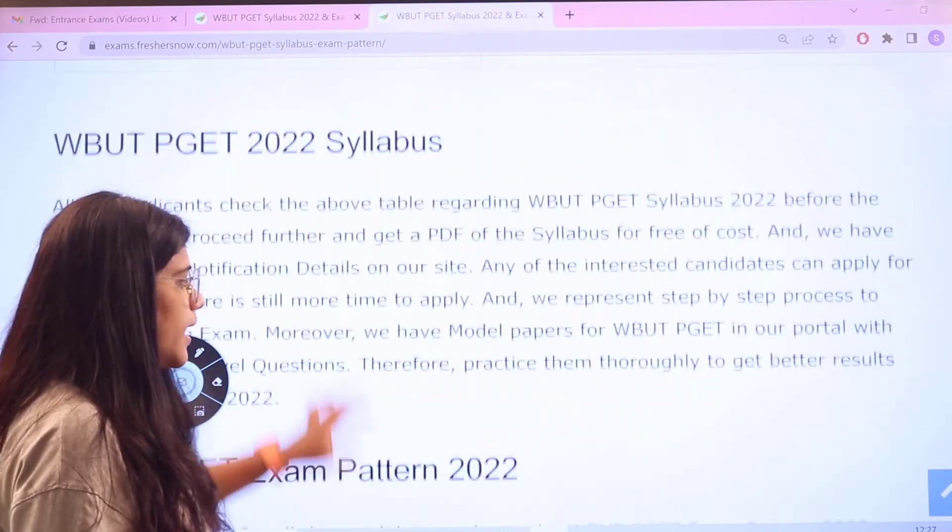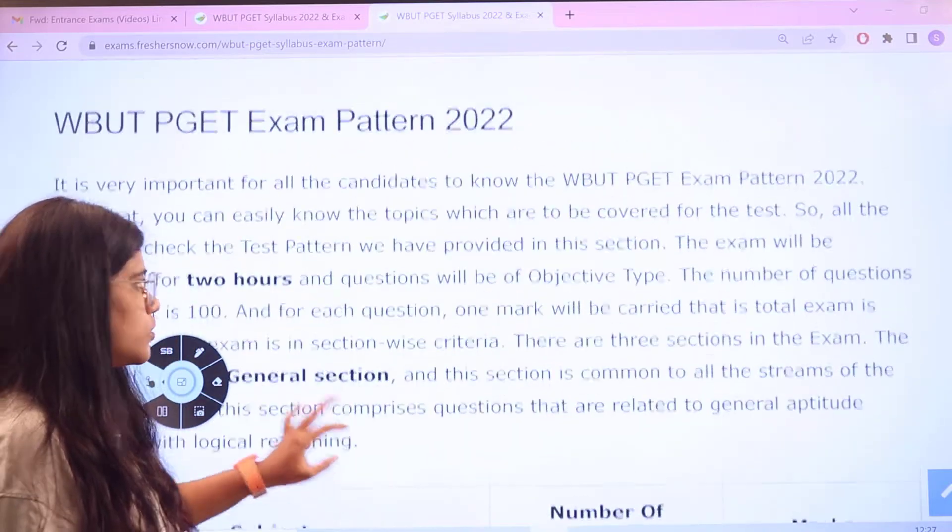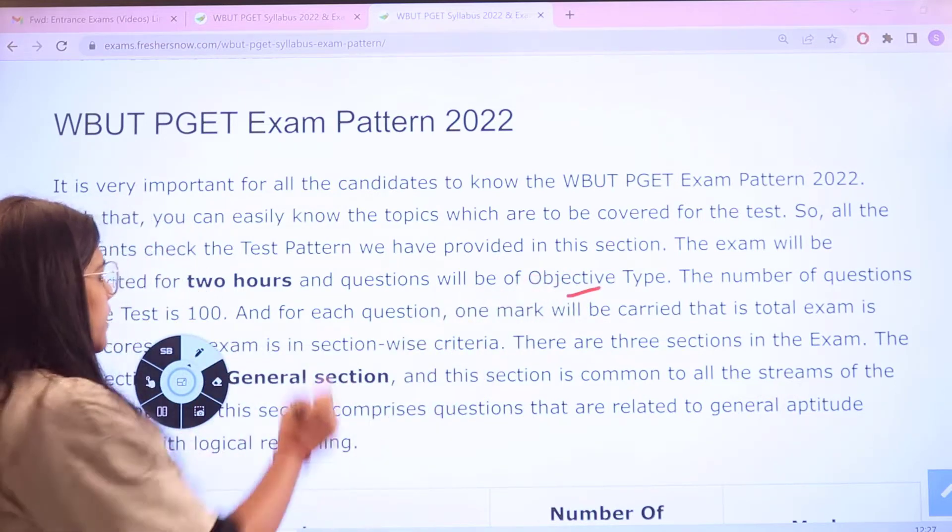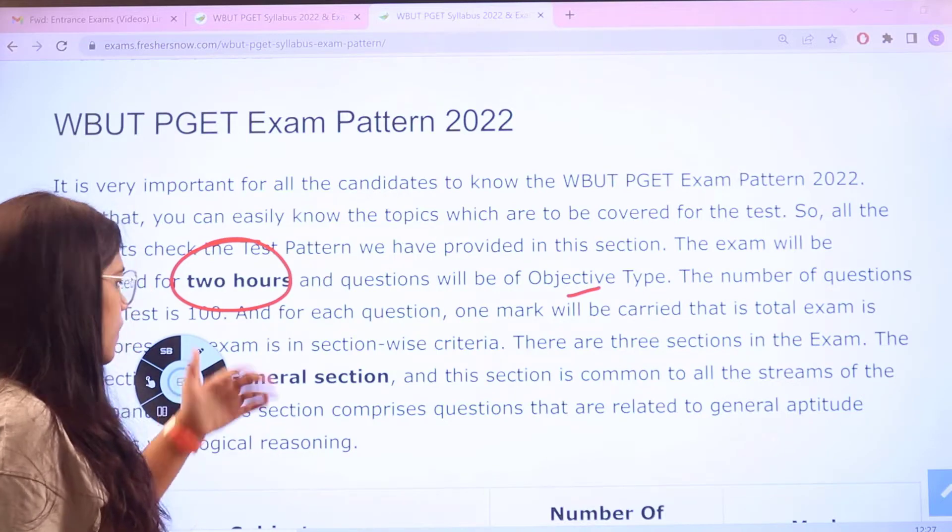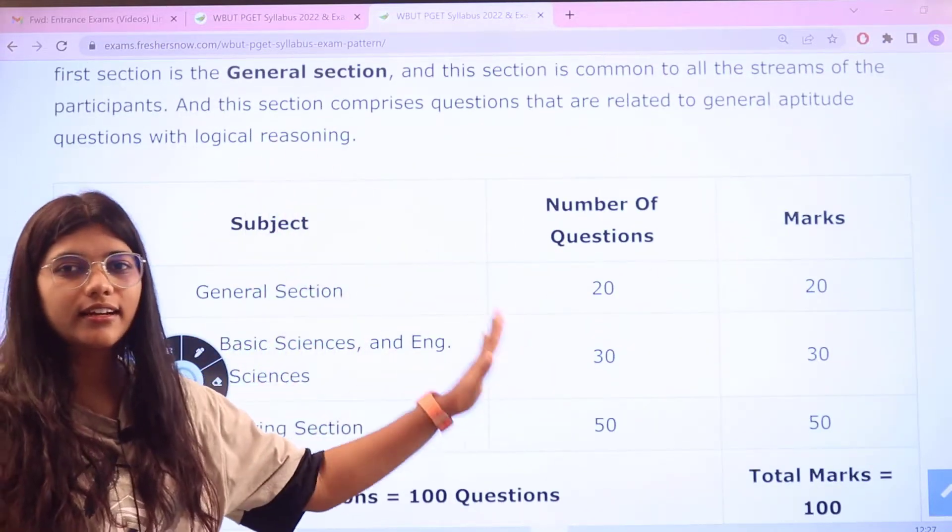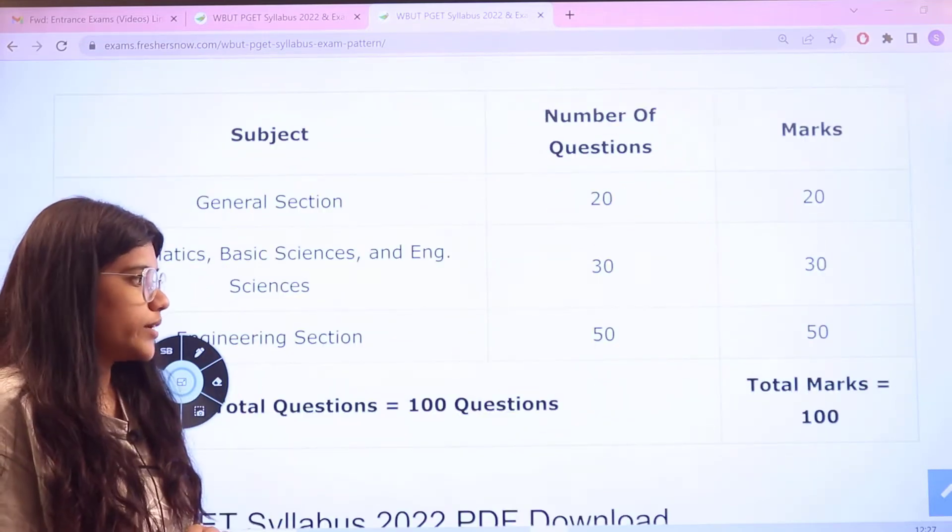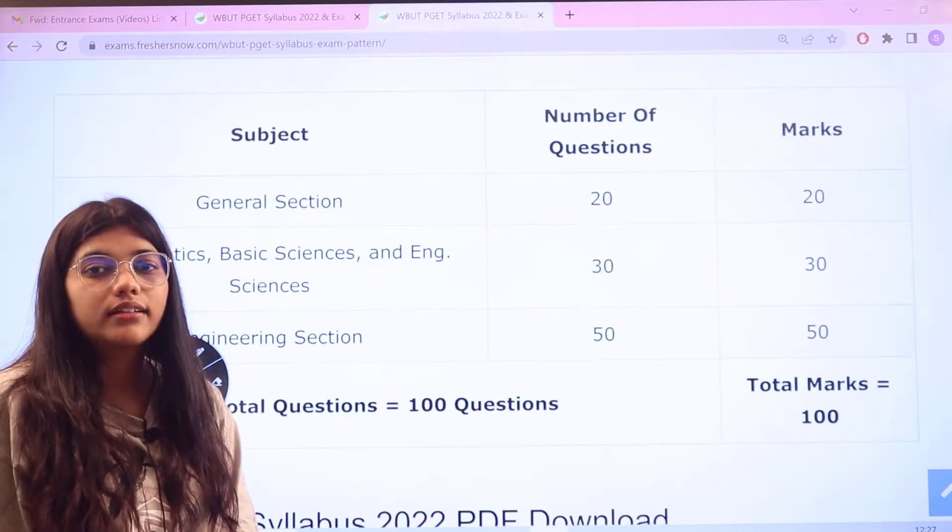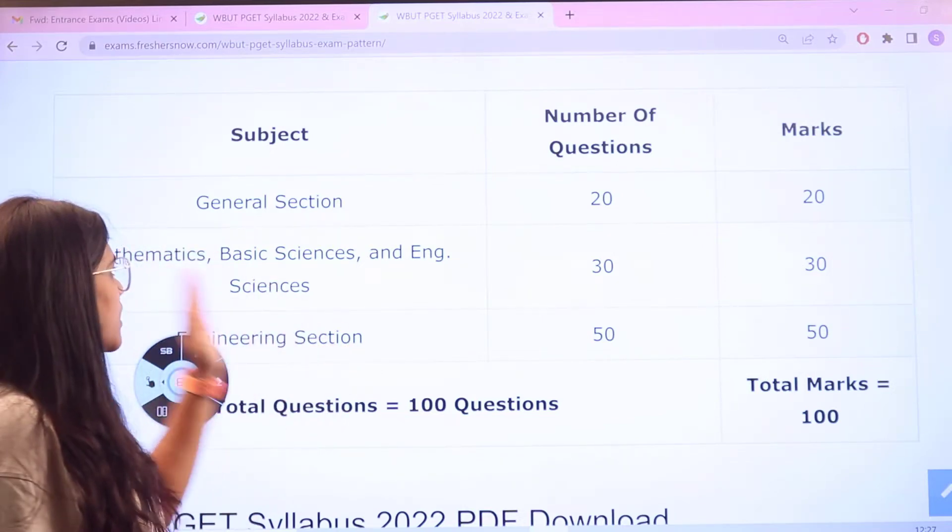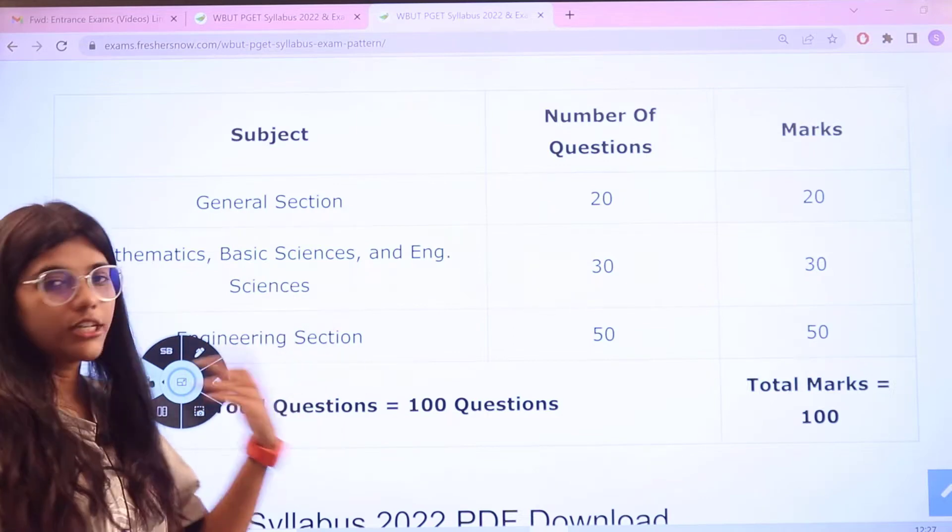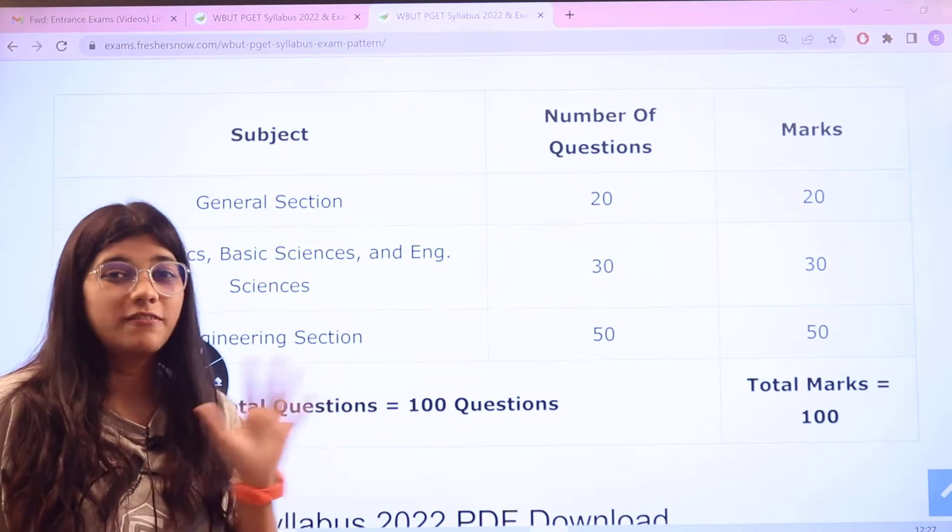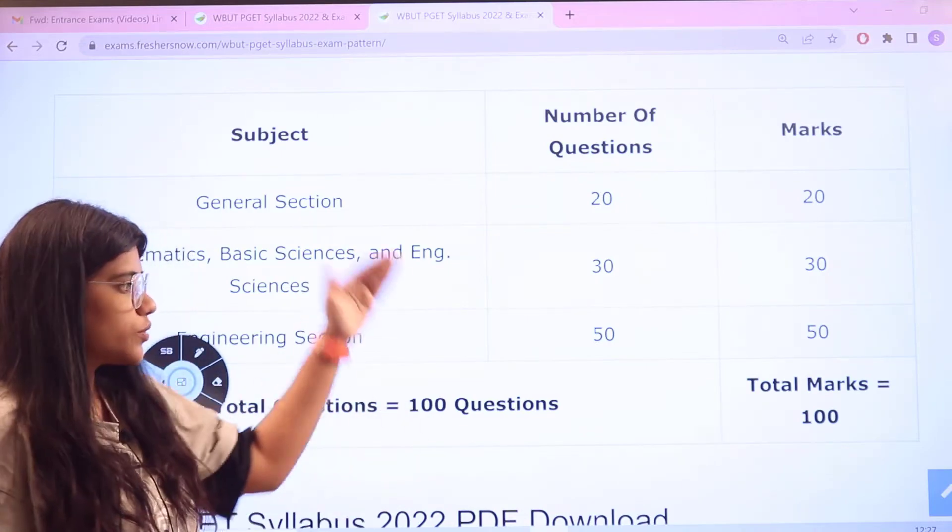Examination pattern is as follows: the examination is going to be objective-based questions which is going to be conducted for two hours. The test pattern or the marking criteria for all the sections are provided very clearly in a table format. The total marks of the questions are hundred and there would be hundred questions asked. General science section have 20 questions carrying 20 marks. For mathematics, basic sciences, and engineering sciences, you have 30 questions for 30 marks. For engineering section especially, you have 50 questions carrying 50 marks. So in total, hundred questions for hundred marks.